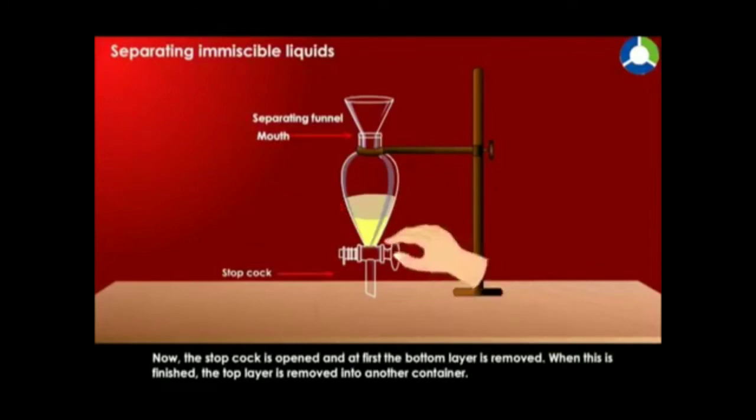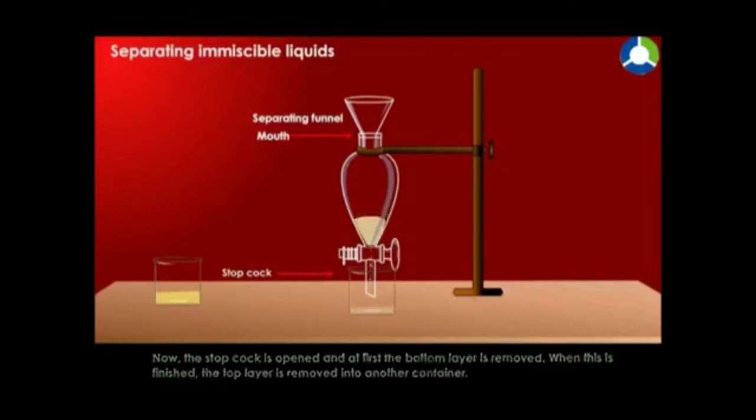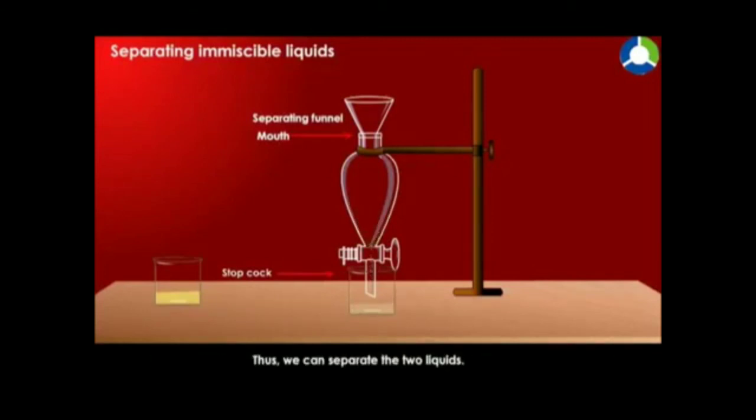Now, the stopcock is opened and at first the bottom layer is removed. When this is finished, the top layer is removed into another container. Thus, we can separate the two liquids.